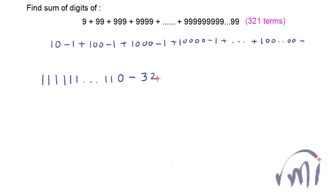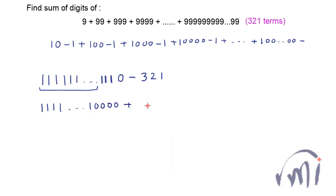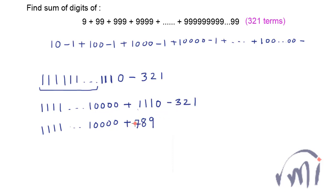So what will that number actually be? The number will be 318 ones followed by 4 zeros, plus 1110 minus 321. This subtraction gives us the last digits: 1110 minus 321 equals 789. So the total sum of the series is a number with 318 ones followed by 789.